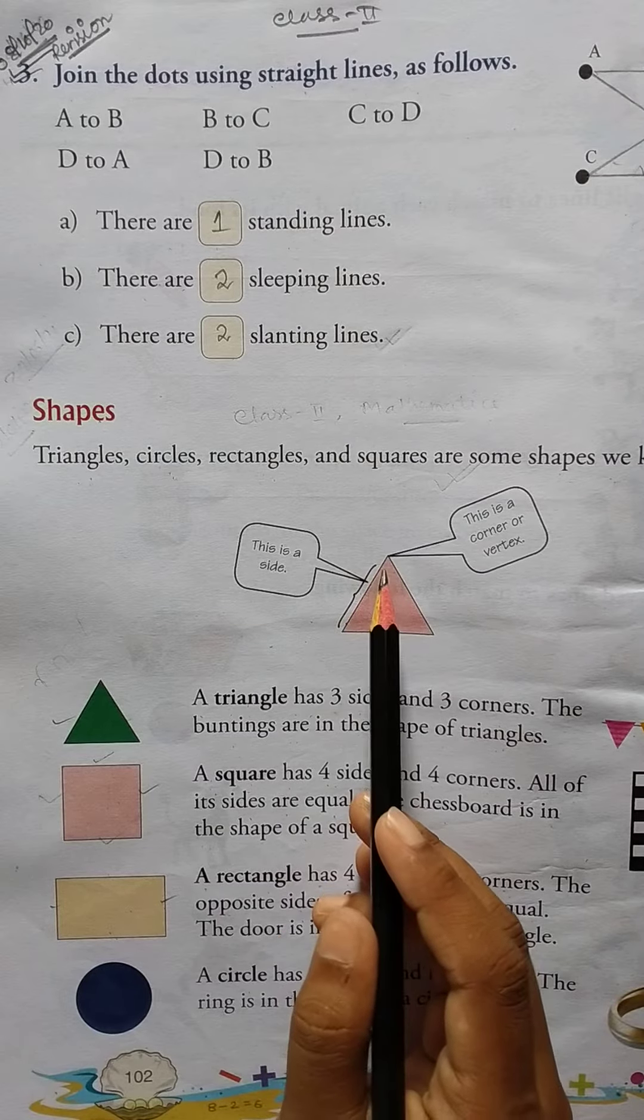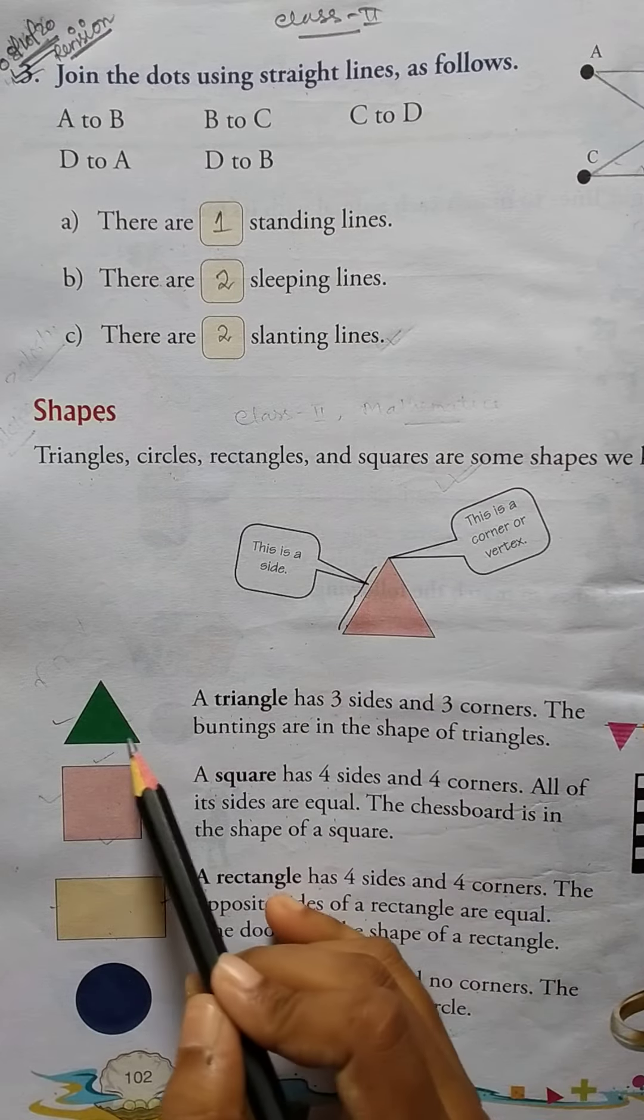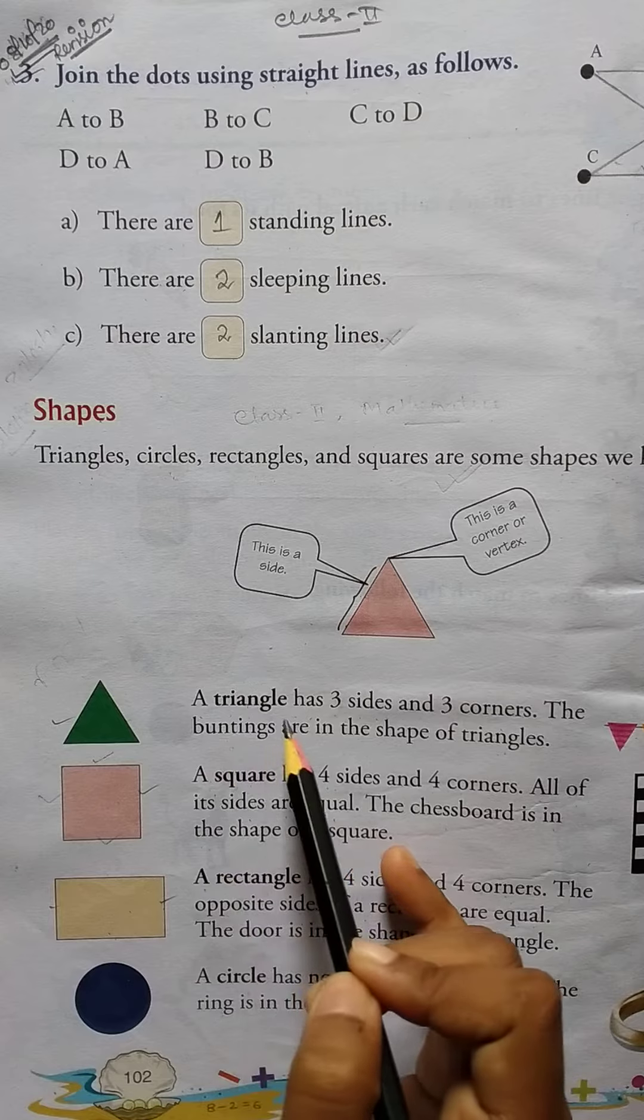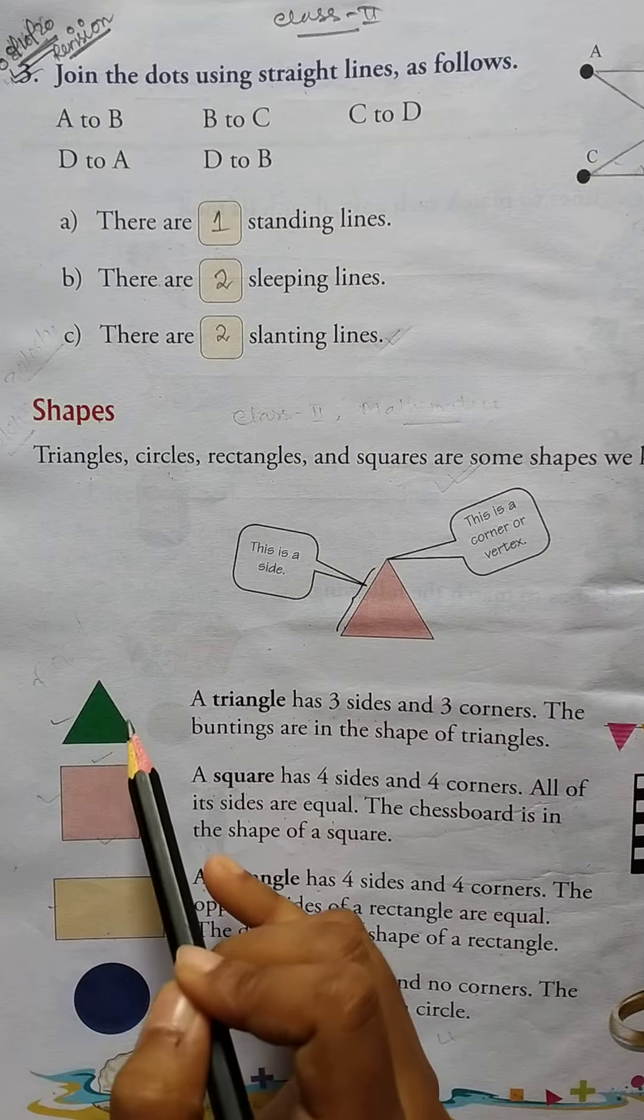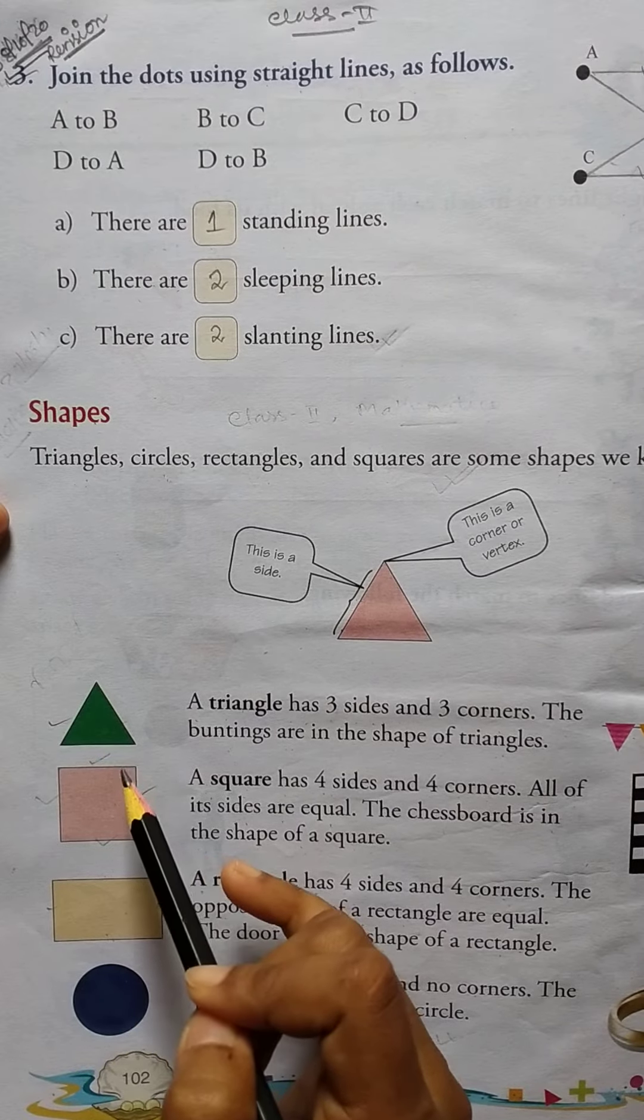Okay, so triangle. A triangle has three sides and three corners. The buntings are in the shape of triangles.